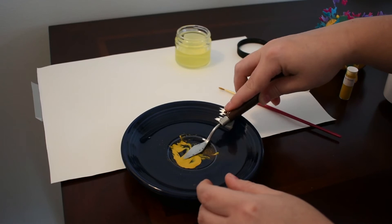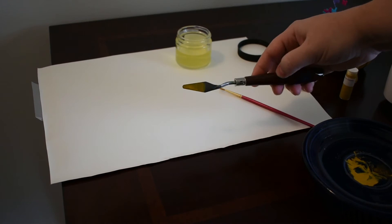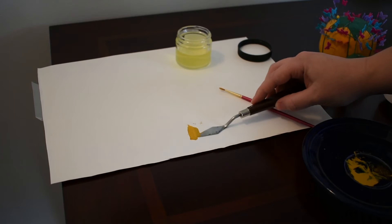Once it's mixed to a creamy consistency, go ahead and test it out on a scrap sheet of paper before you use it on your scroll or any other art project that you're doing, just to make sure that you have the opacity right.